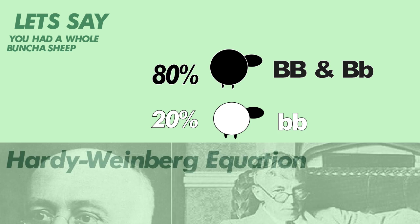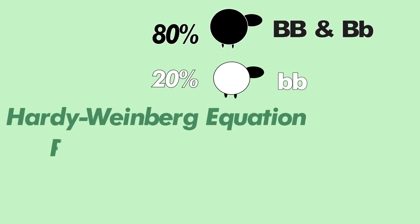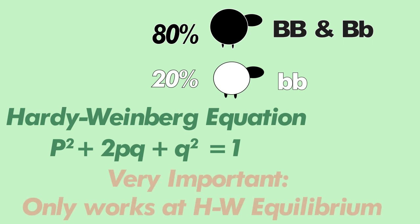Now the Hardy-Weinberg equation gives us p² + 2pq + q² = 1. It adds up to 1 because we're talking about proportions. This equation does not work unless you have a Hardy-Weinberg equilibrium.